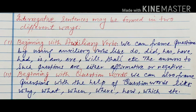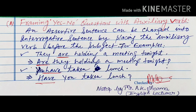Questions can begin with question words — that is, they can start with question words such as why, what, when, where, how, which, etc. So using these question words, we can also form and frame questions. First, we are framing questions using auxiliary verbs, whose answers will come in yes or no. So: framing yes/no questions with auxiliary verbs. As we have written, an assertive sentence can be changed into an interrogative sentence by placing the auxiliary verb before the subject.